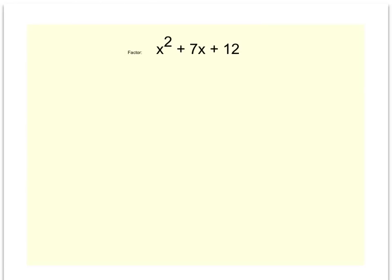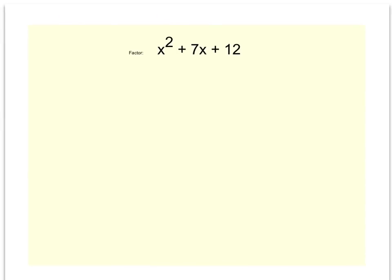This video is called Factoring When A Equals 1. A, in this case, is the number or coefficient in front of the x squared. So when a equals 1, there's really an implied 1 here. So now to factor something like this, the first thing you'll ask yourself is, can I take out a GCF?